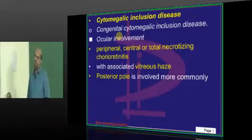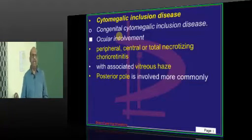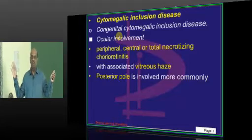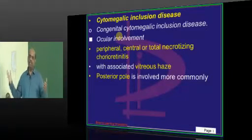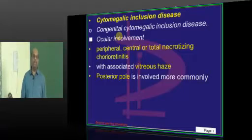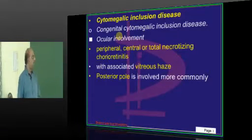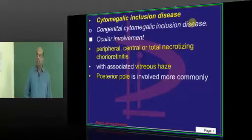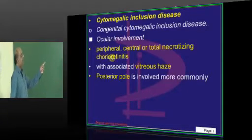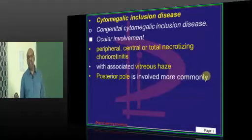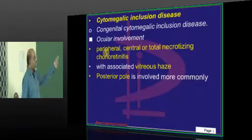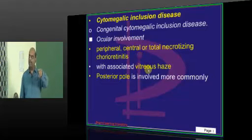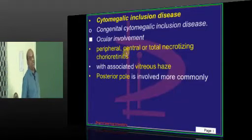Now, CMV general features - what type of virus it is, how it is transmitted - we will cover in microbiology. Let us go straight to the ocular part. CMV can lead to chorioretinitis, which is necrotizing in nature, which typically starts peripherally growing towards the central part of the retina and ultimately leading to total retinal invasion.